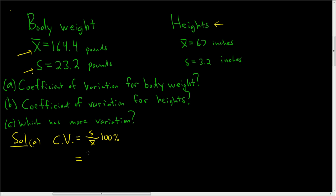So for the first one it'll be 23.2 divided by 164.4 and this is being multiplied by 100 and then we attach the percent sign at the end. So this is equal to, using a calculator, 14.11%. So that is the coefficient of variation for the body weights. We use the information for the body weights to do part A.